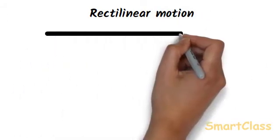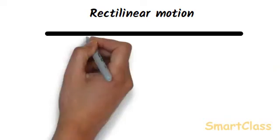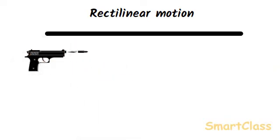Rectilinear motion. Motion in a straight line is called as a rectilinear motion. For example, when a bullet is fired from a gun, the bullet moves in a straight line. So the movement of a bullet fired from a gun is an example of rectilinear motion.